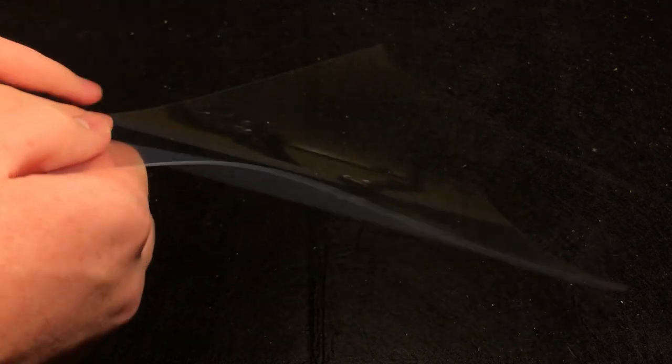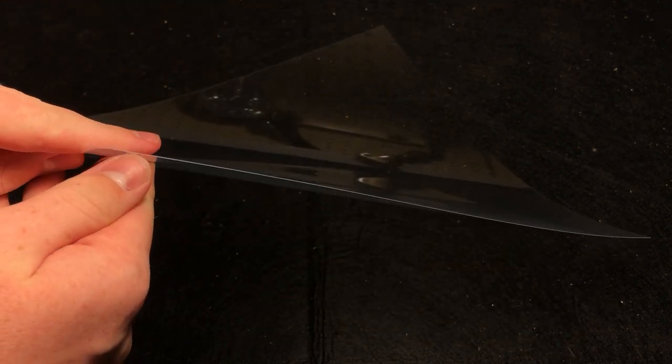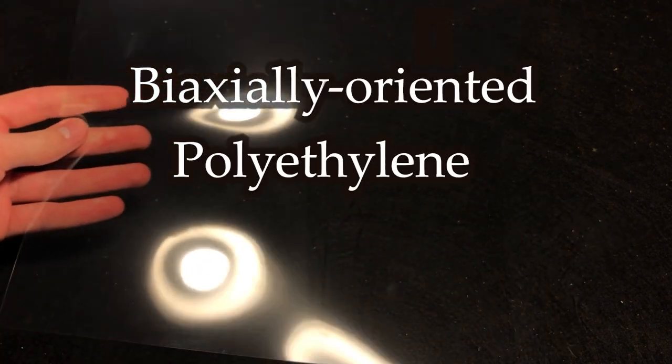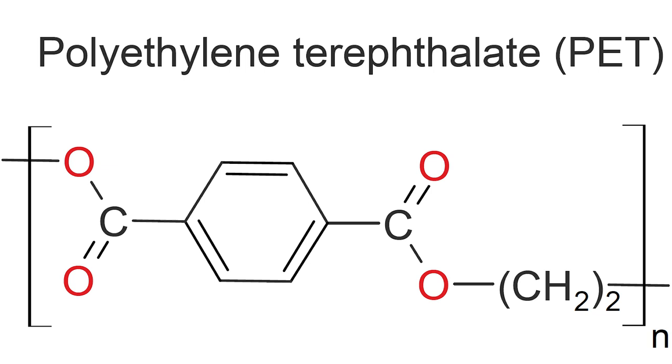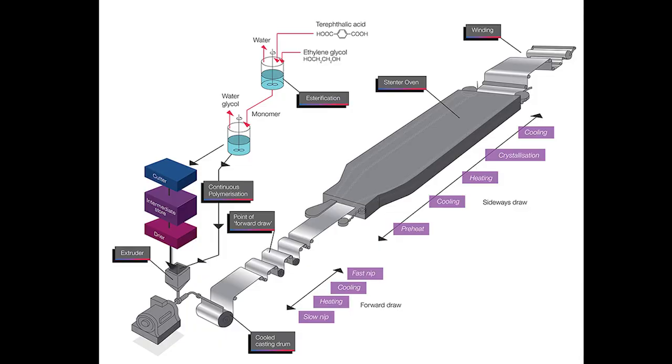The reason that mylar is able to achieve these impressive values is because of how it is configured on the molecular level. Chemically mylar is known as biaxially oriented polyethylene terephthalate. It has the same chemical formula as the plastic in water bottles, however it differs due to an important manufacturing step where the polyethylene terephthalate sheets are stretched in two perpendicular directions while being heated. This aligns the polymer fibers of polyethylene terephthalate into a planar structure which is responsible for the unique properties of mylar.